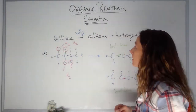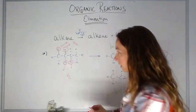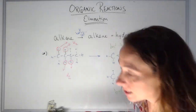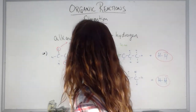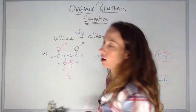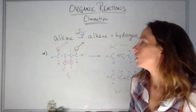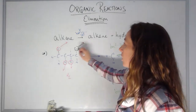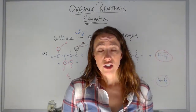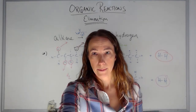The mistake people make is trying to take two hydrogens that are not beside each other — that doesn't work. The hydrogens have to be neighboring to form the double bond. And that covers all three elimination reactions under our syllabus.